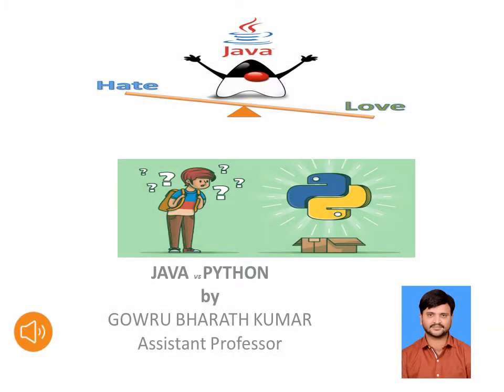Dear students, welcome back. In today's session we will show the difference between Java and Python. As a computer science student or Bachelor of Technology student, we will definitely face a question related to which is the best programming language. The main difference is that Java is statically typed and compiled, while Python is dynamically typed and interpreted.